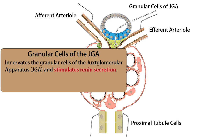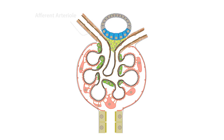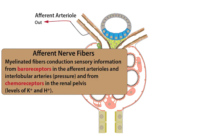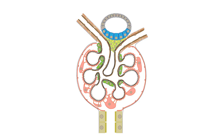Renal innervation also includes a few myelinated afferent or sensory fibers, which conduct activity from baroreceptors and chemoreceptors. For example, increased perfusion pressure activates renal baroreceptors located in the interlobular arteries and afferent arterioles, while hypoxia or renal ischemia and abnormal ion composition of the interstitial fluid stimulate chemoreceptors located in the renal pelvis. These pelvic chemoreceptors are thought to respond to high extracellular potassium and hydrogen ions, which may alter capillary blood flow.